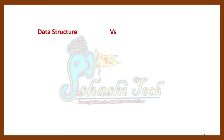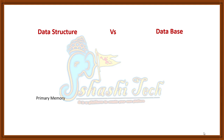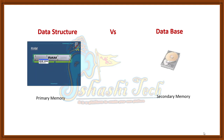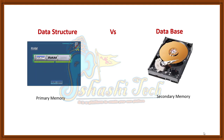Before discussing the definition of a data structure, we must understand the difference between data structure and database. Data structure deals with primary memory whereas the database deals with secondary memory. Primary memory means RAM whereas secondary memory means hard disk.